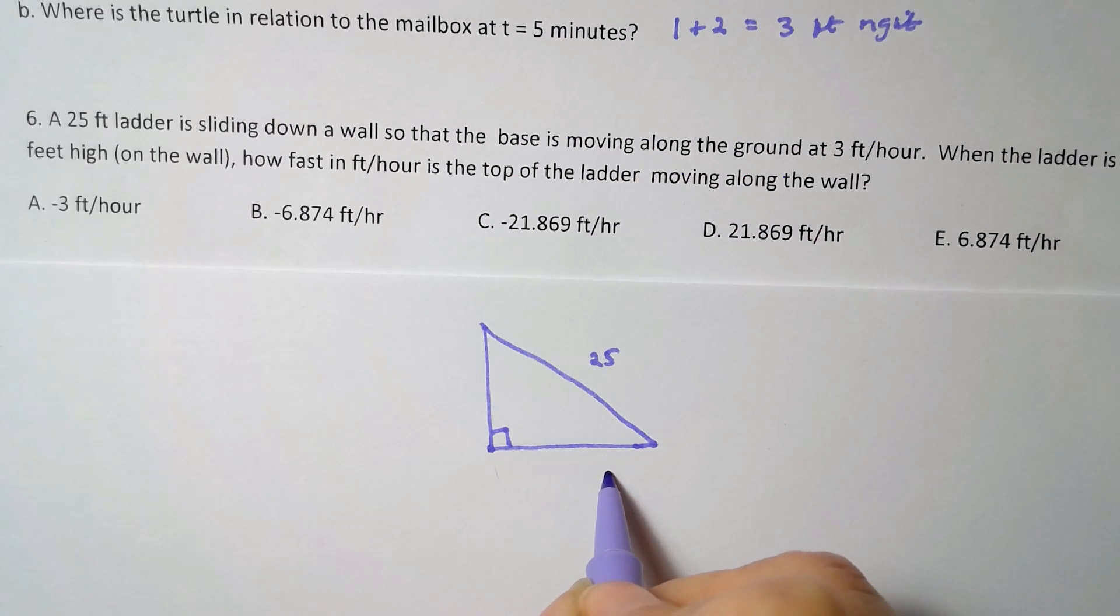And what I know is that the ladder's sliding down the wall so that the base is moving along the ground at three feet per hour. So I know that dx/dt is equal to three. And it's positive three because the base isn't going in. If it was negative, it'd be like the ladder sliding up the wall or something.